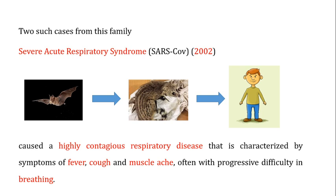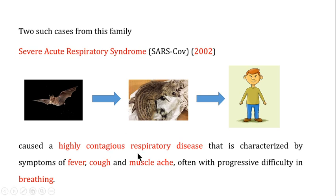The world has already seen two such cases from this family. The first is Severe Acute Respiratory Syndrome, which occurred in 2002 in China. The theory is that the virus transferred from bats to civet cats, and from cats to human beings. The symptoms of SARS were a highly contagious respiratory disease characterized by fever, cough, and muscle ache, often with progressive difficulty in breathing.